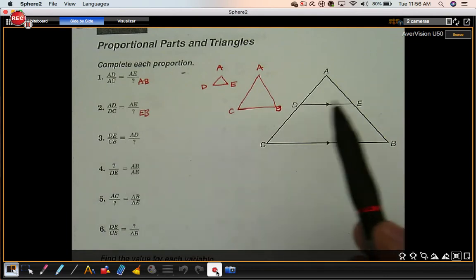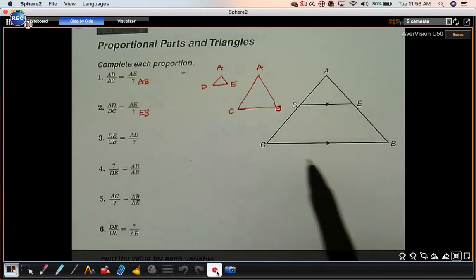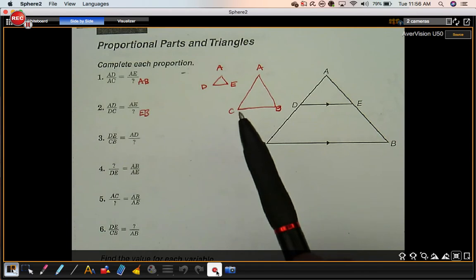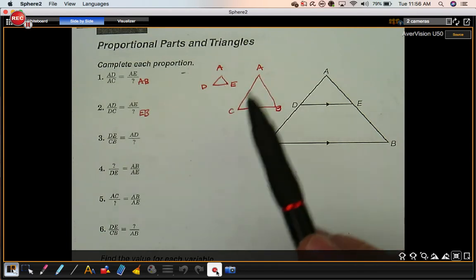Number 3. D to E. That's an entire side, compared with C to B. That's an entire side. So bottom to bottom equals left side to left side.